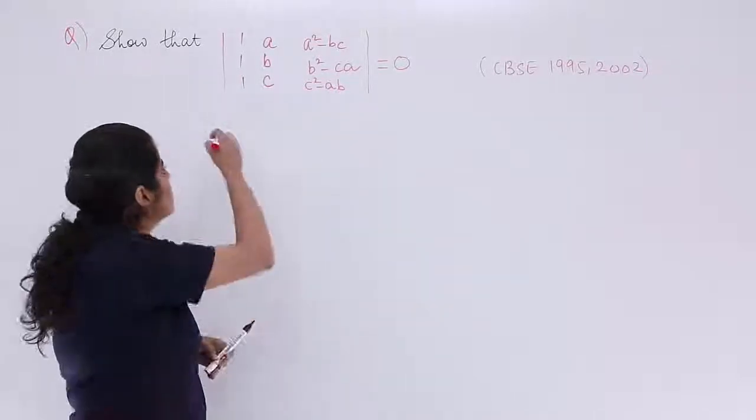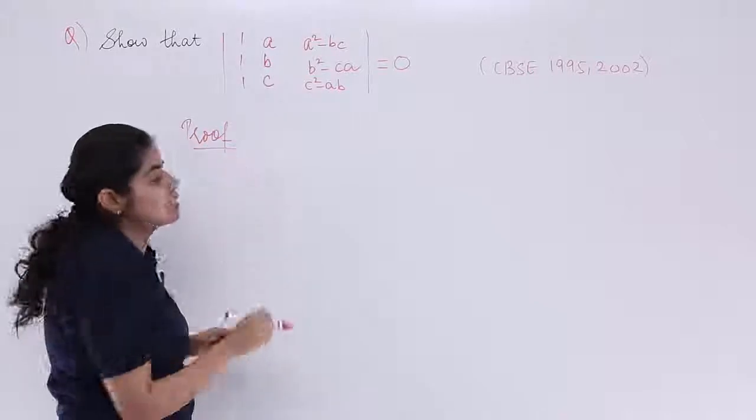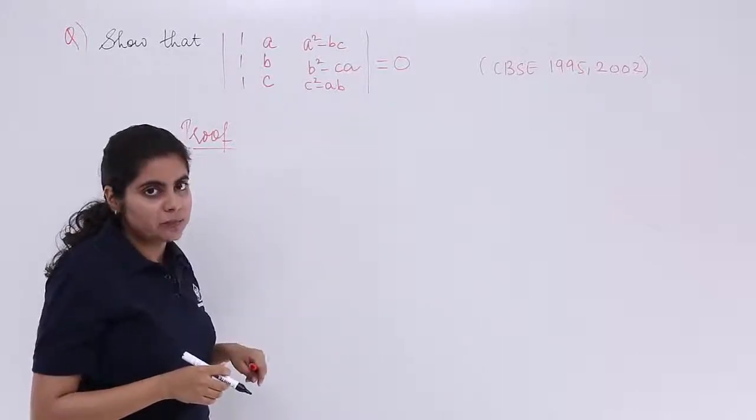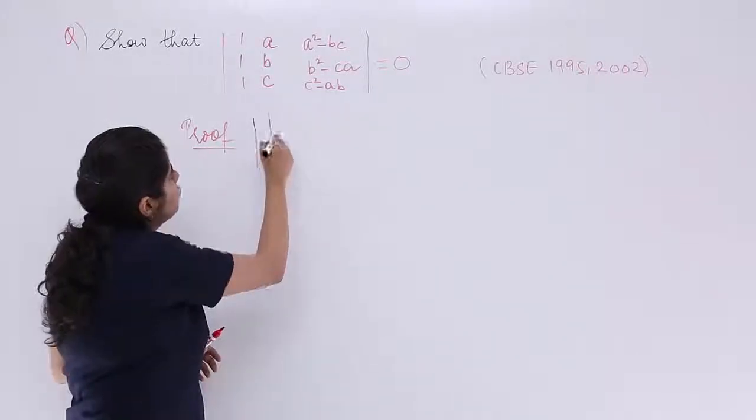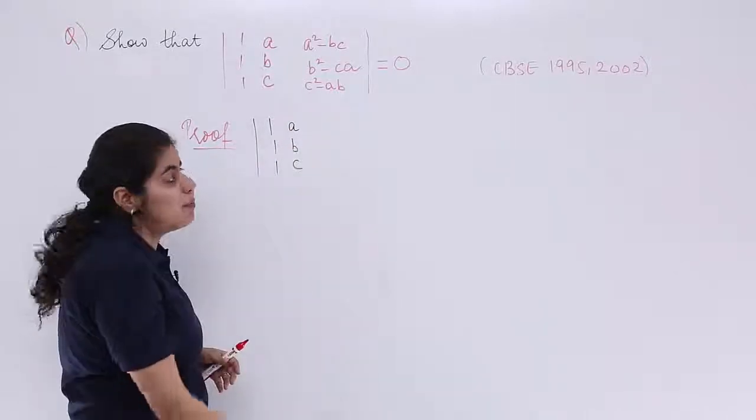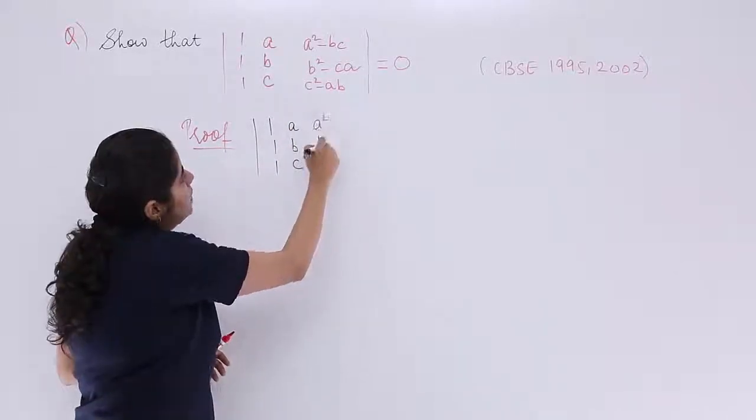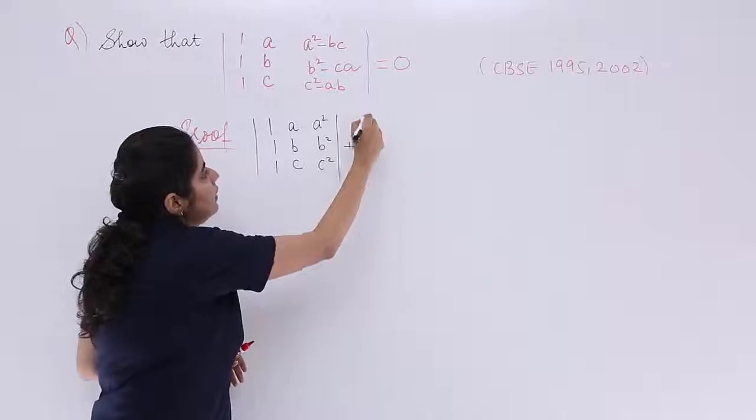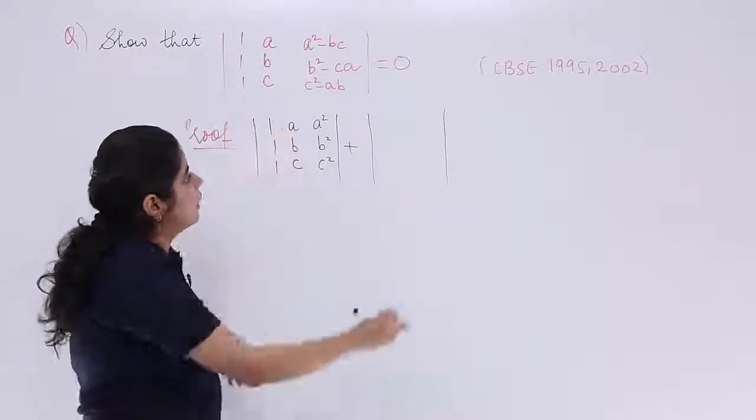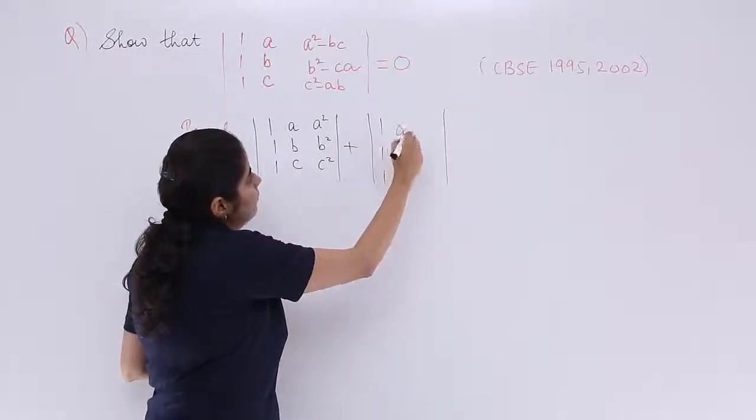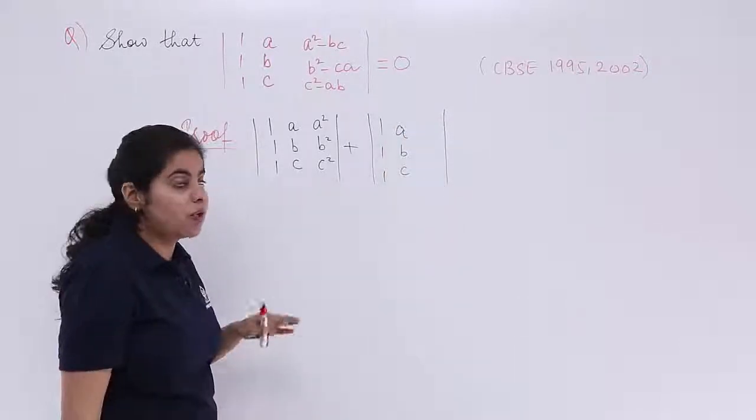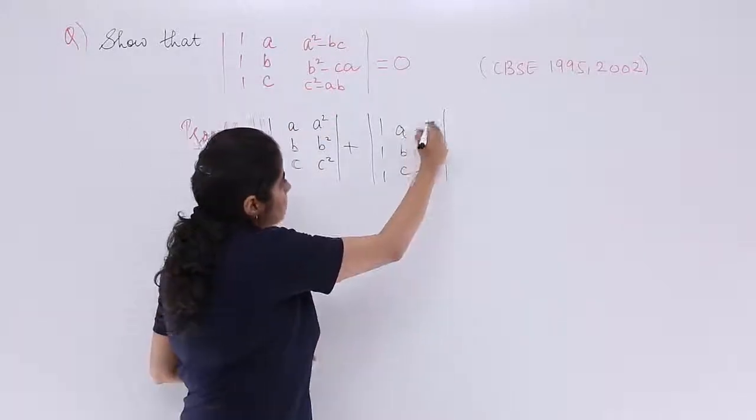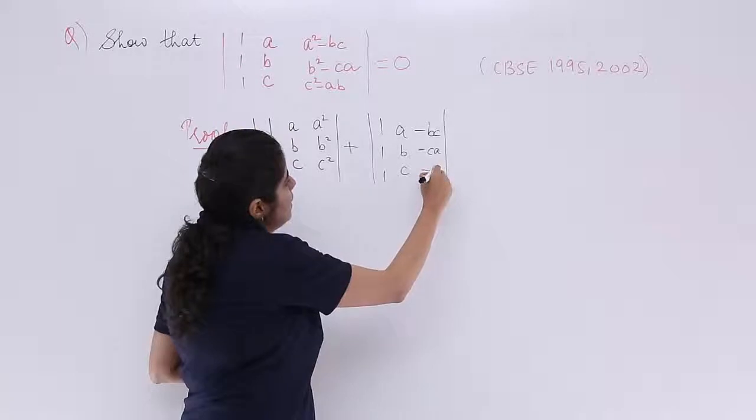So, can we not write the heading proof and get started with this question wherein we can separate into two determinants. We know this property, right? So, the question changes to 1, 1, 1, A, B, C, A square, B square, C square. And again some other determinant, and that other determinant is 1, 1, 1, A, B, C, and what is left? Minus BC, minus CA, minus AB is there.